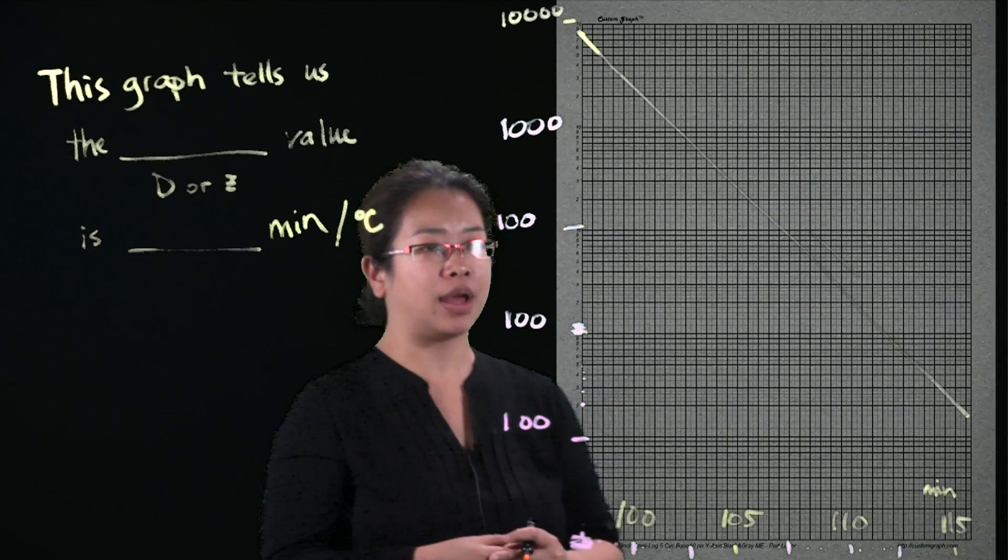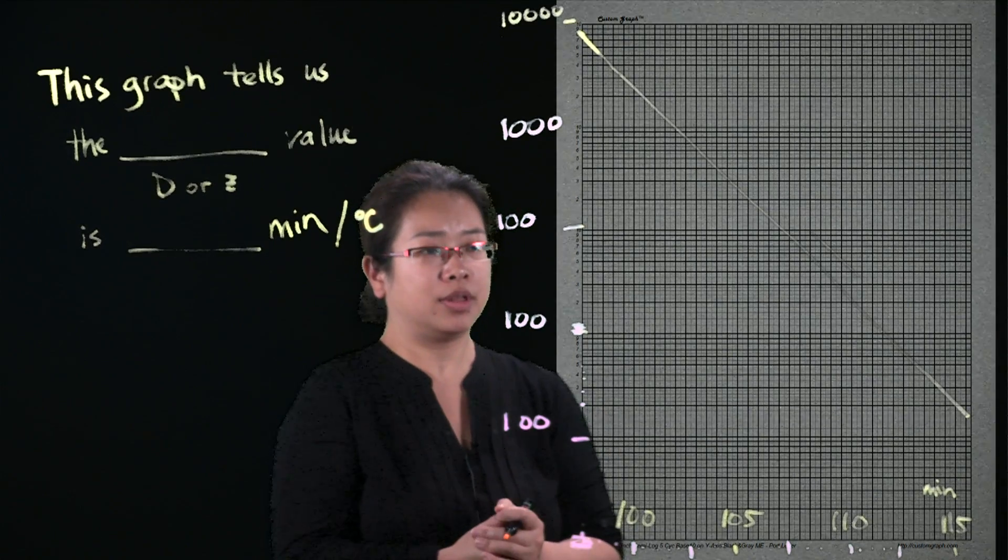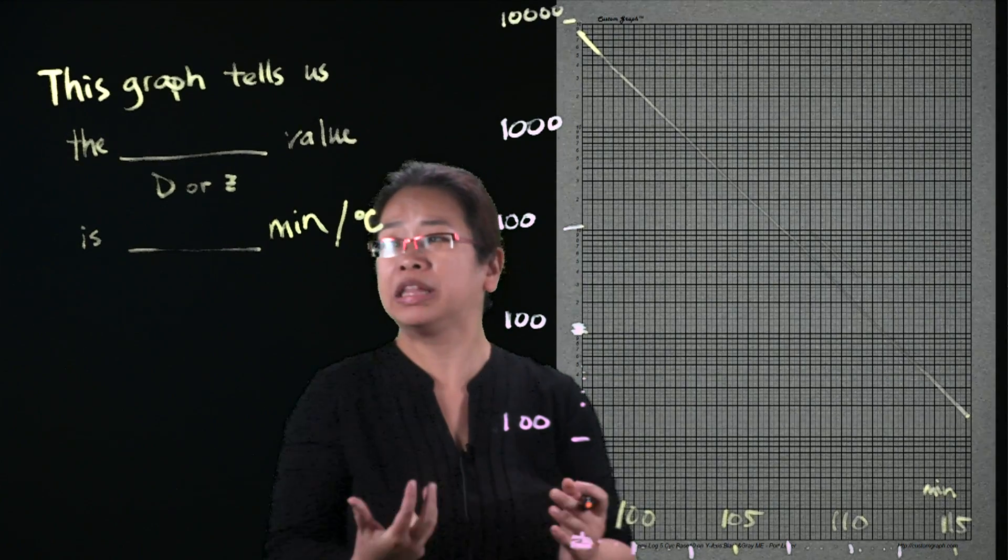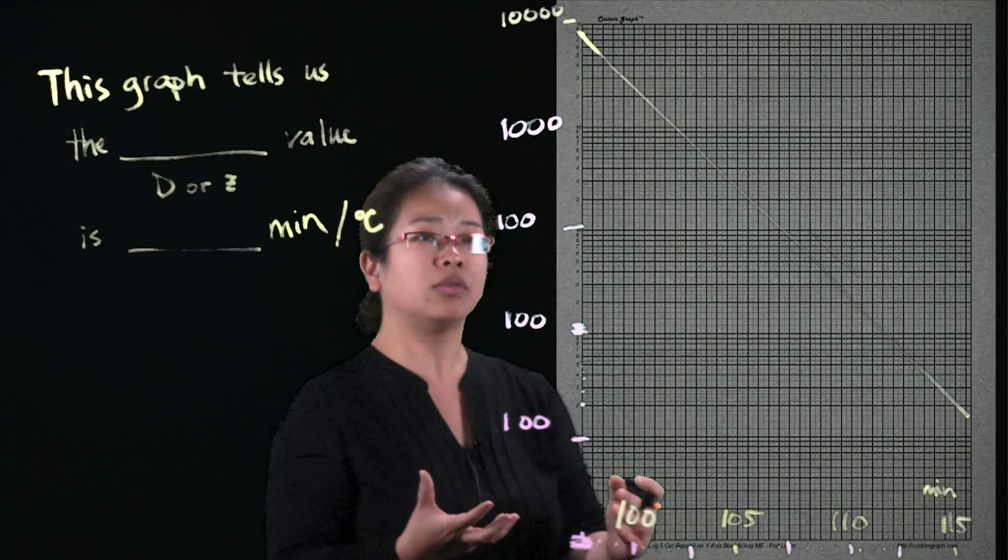This graph, what is this graph? And what does it tell us? Is it D value? Is it Z value? And what is it? Just taking a look at the graph.